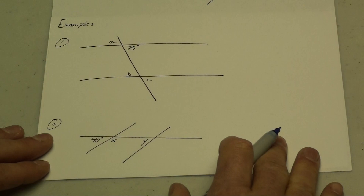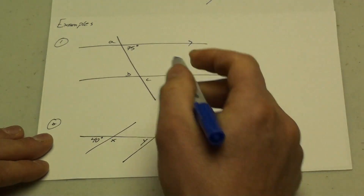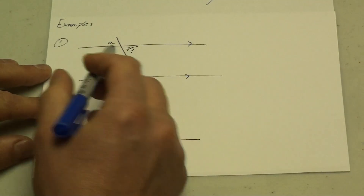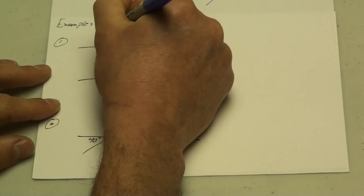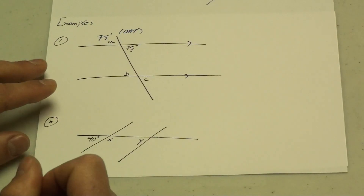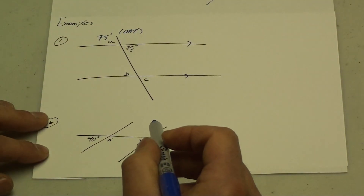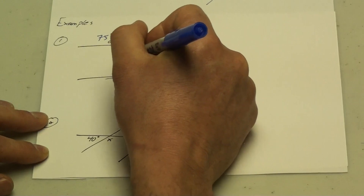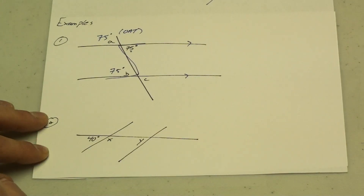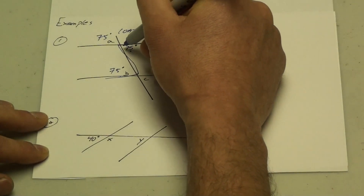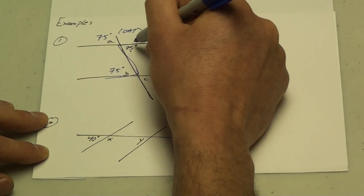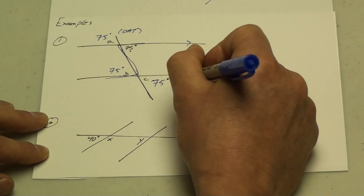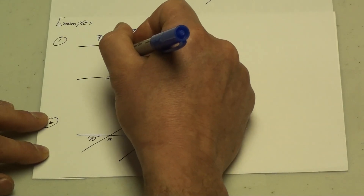Here are a couple of examples. I have parallel lines and 75 degrees. Using my angle theorems, let's figure out the missing angles. This is 75 degrees, which means the angle up top is also going to be 75 degrees — determined by the Opposite Angle Theorem. From this 75 degrees, I can find angle B because that forms the Z pattern, so B would also be 75 degrees. And using the F pattern — the corresponding angles — angle C is also 75 degrees. I used the F pattern to find angle C.